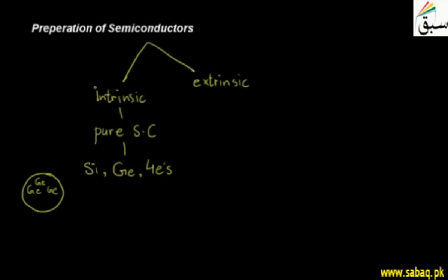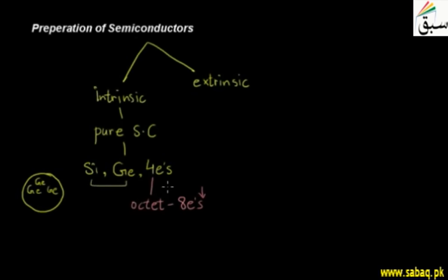In chemistry, there is a role called the octet rule. The octet rule states that if any element has eight electrons in its outermost valence shell, the atom is stable. It will bond with other elements so that the outermost shell completes eight electrons and becomes stable. Similarly, silicon and germanium will complete their outermost valence electrons and the molecule will be stable.